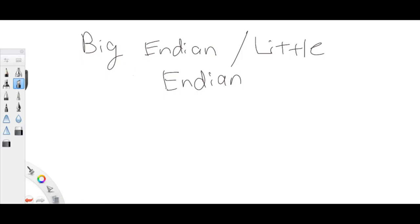Basically, big endian and little endian refer to different types of machines that store bits differently depending on the type of machine. Big endian is when the bits are stored starting from the leftmost bits first — like how you normally see a number. Little endian is when the rightmost bits are actually stored first, and then the far left bits.